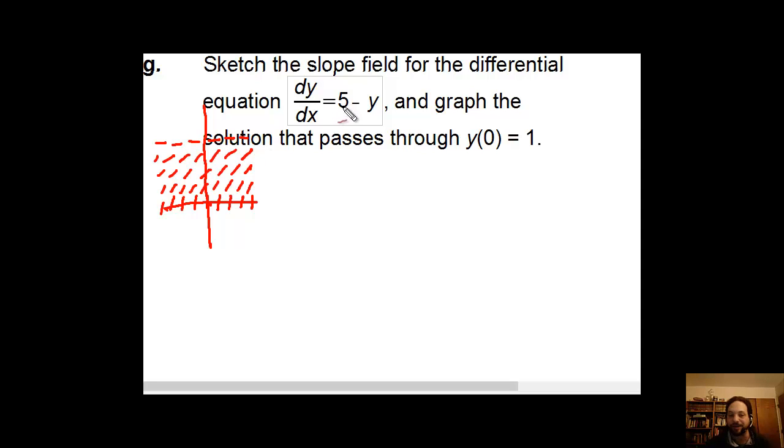Anything higher than 5, like 6, let's say, is actually going to have a negative slope. And of course, the higher we go, the more negative that slope is going to get. So here's a slope field dealing with this equation right here.